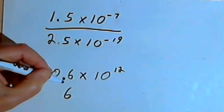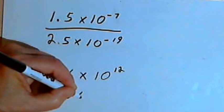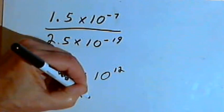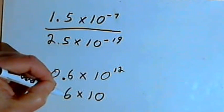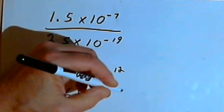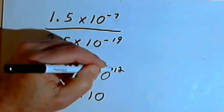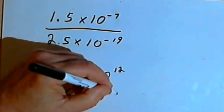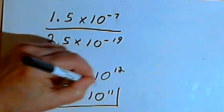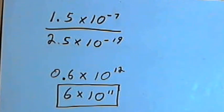And then to compensate for moving that decimal point, I'm going to have to change the power of 10. Since I made 0.6 into 6, which made it bigger, I want to make the power of 10 smaller. So instead of 10 to the 12th, I'll make it 10 to the 11th. So my answer is 6 times 10 to the 11th.